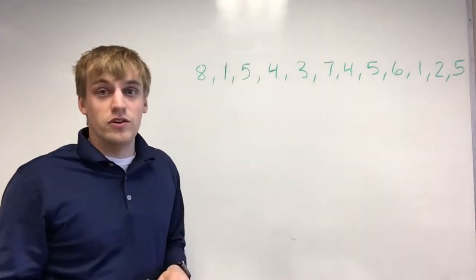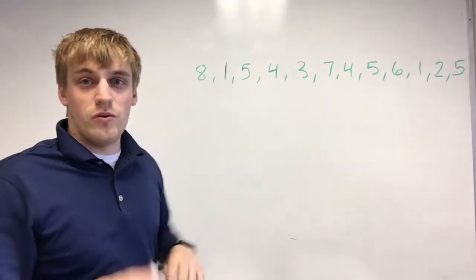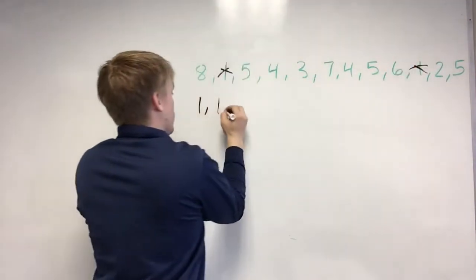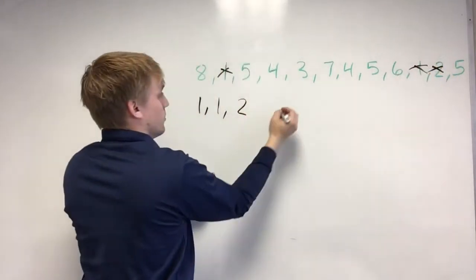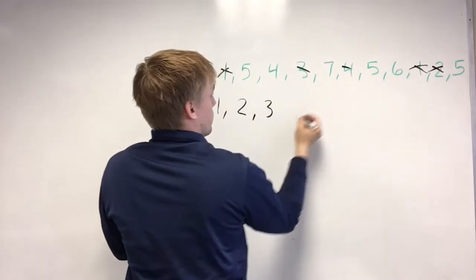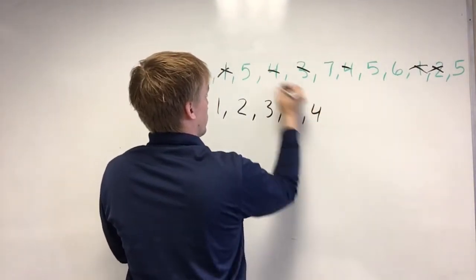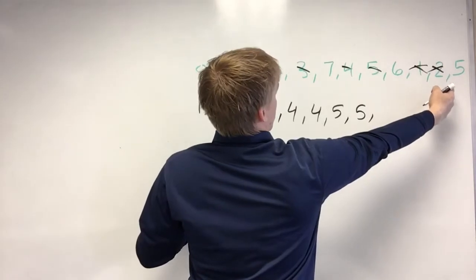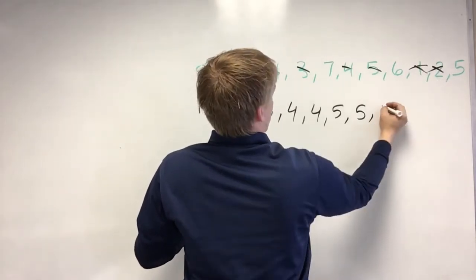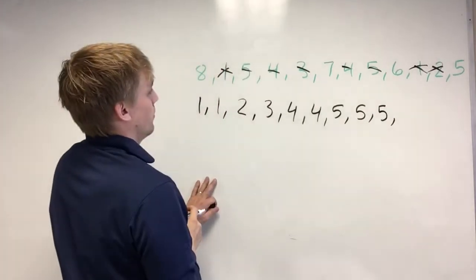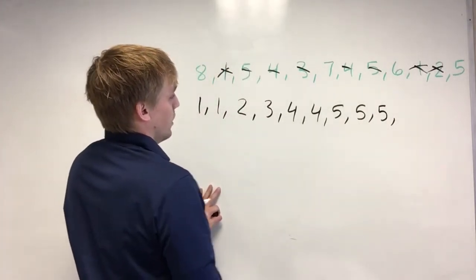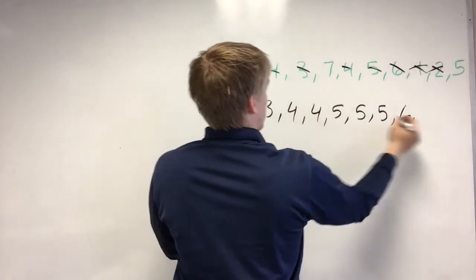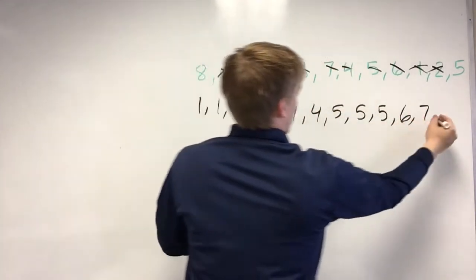The first thing we're going to do, like I talked about, is put these in order right away — I think it's the easiest thing to do. I see a one, another one, two, three, three, four, another four, five, five, another five, another five, a six, seven, and eight.